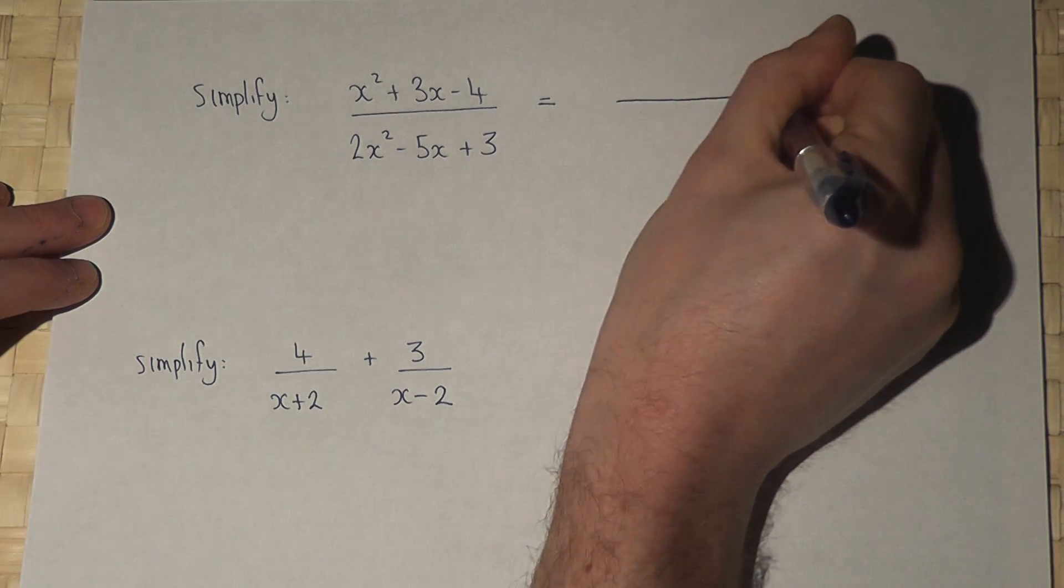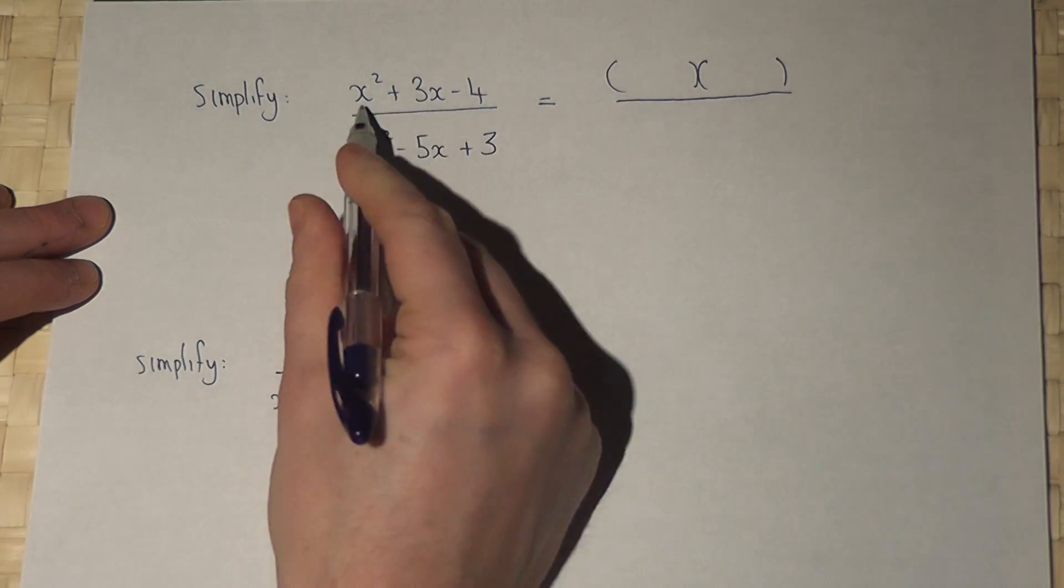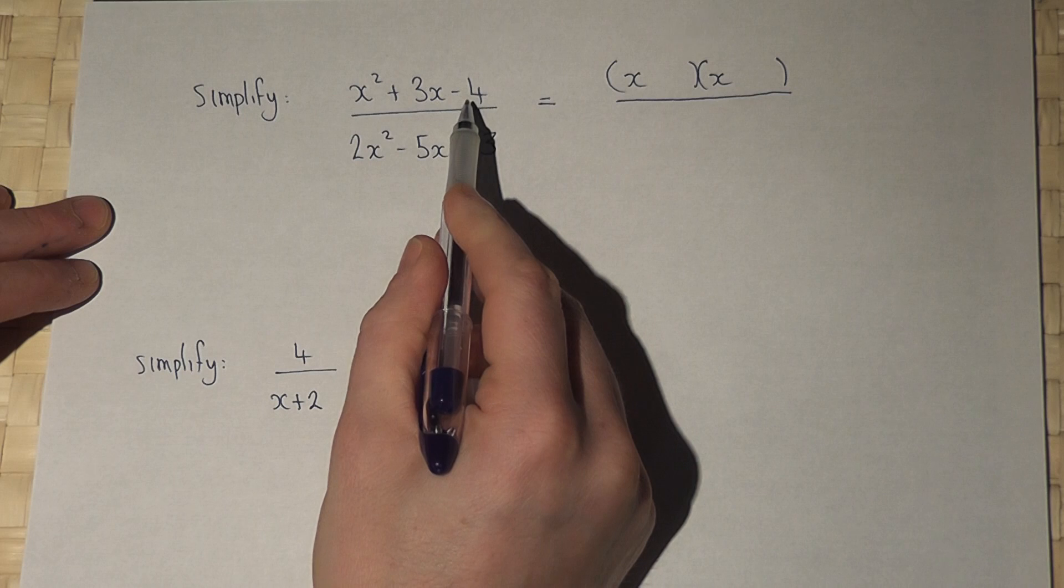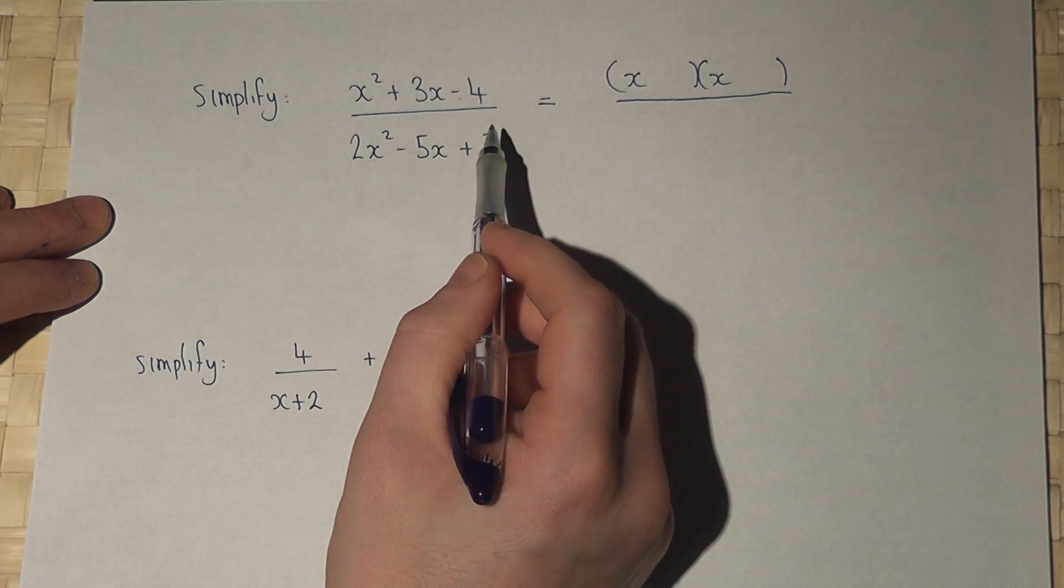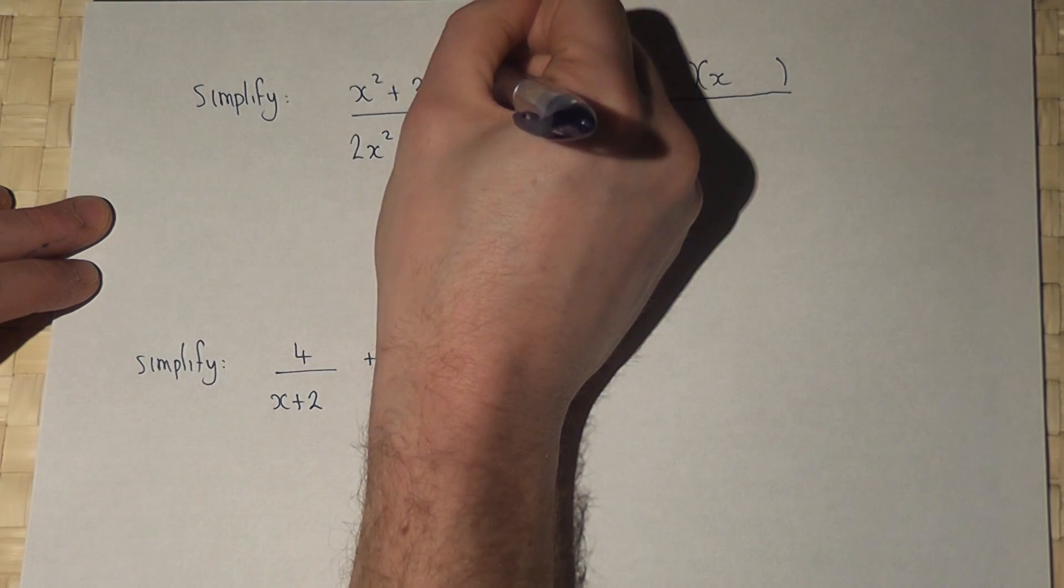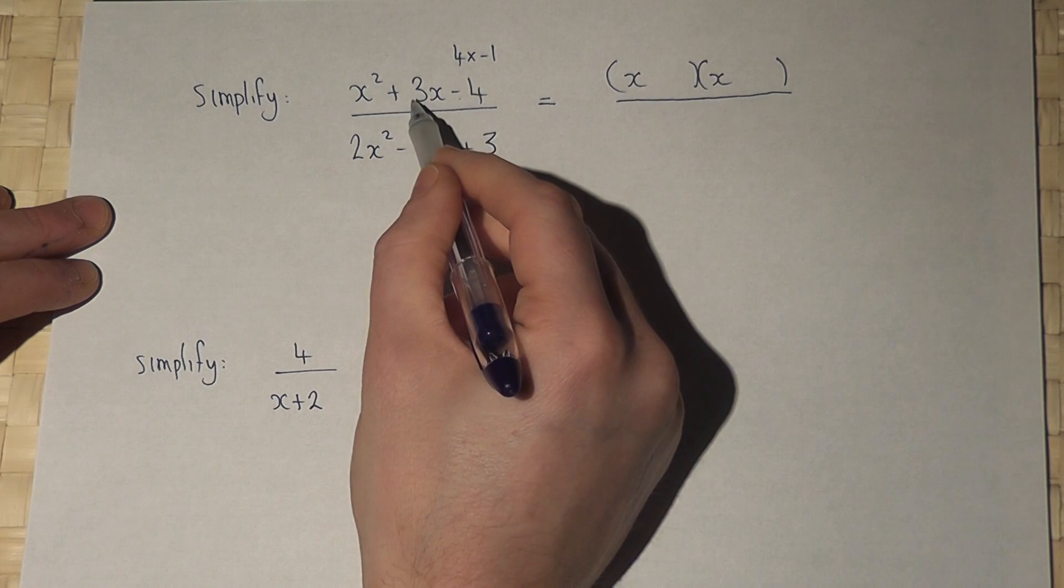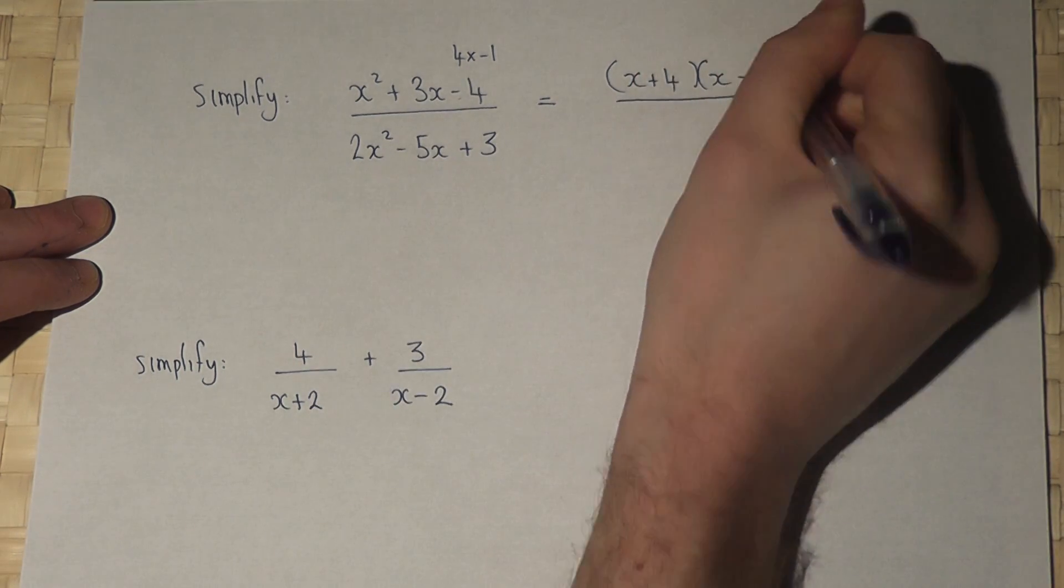Now the top is not too hard to factorize. There's an x squared, so x and x, but there's a minus 4. So therefore the factors of minus 4 is 4 times minus 1, and 4 take 1 is 3, so it's x plus 4 and x minus 1.